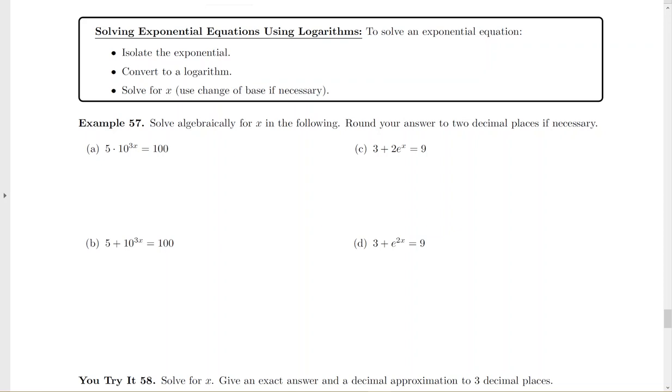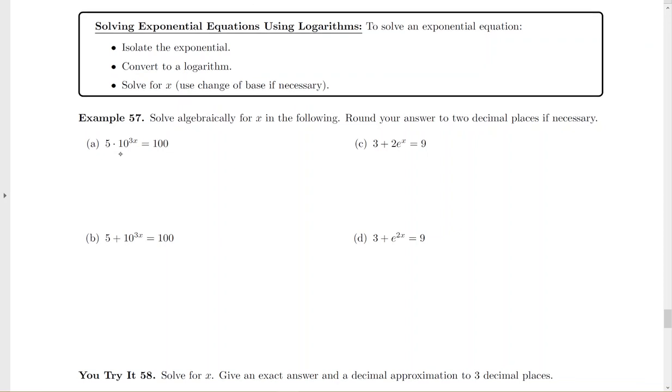For the first one, this is my exponential right here, so I need to get rid of the 5. Notice it's hooked by multiplication, so you're going to divide both sides by 5. So we have 10 to the 3x equals 20. The 10 is hooked to the 3x not by multiplication, so I can't divide both sides by 10.